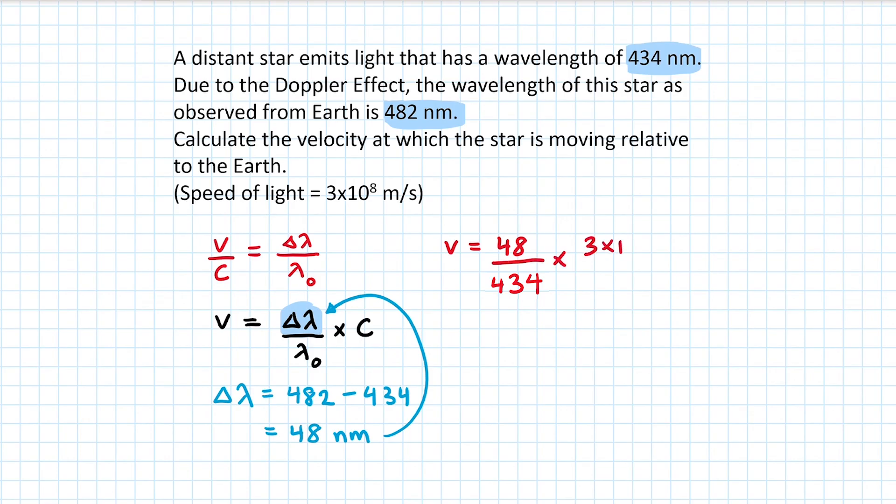Multiplying by the speed of light, 3 times 10 to the power of 8 meters per second, we get approximately 3.3 times 10 to the power of 7 meters per second. In other words, that's 33 million meters per second.